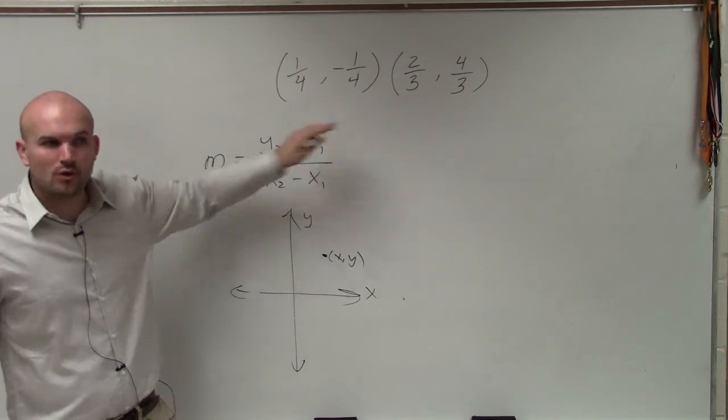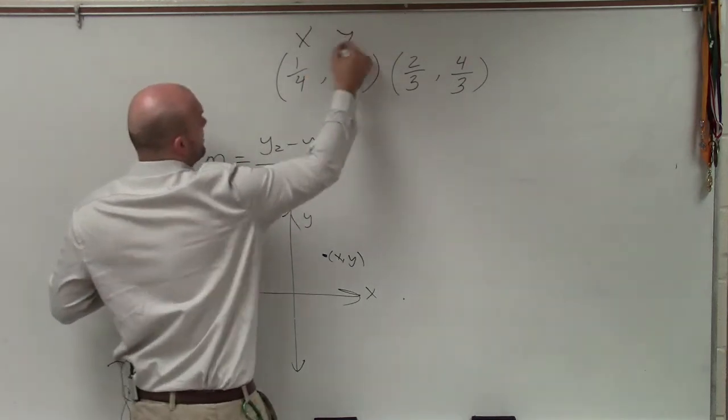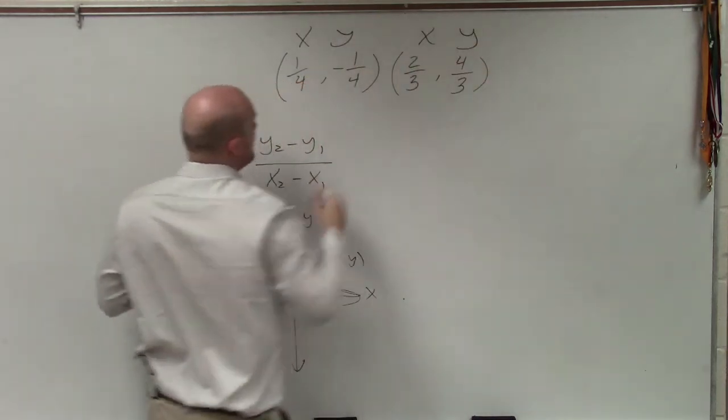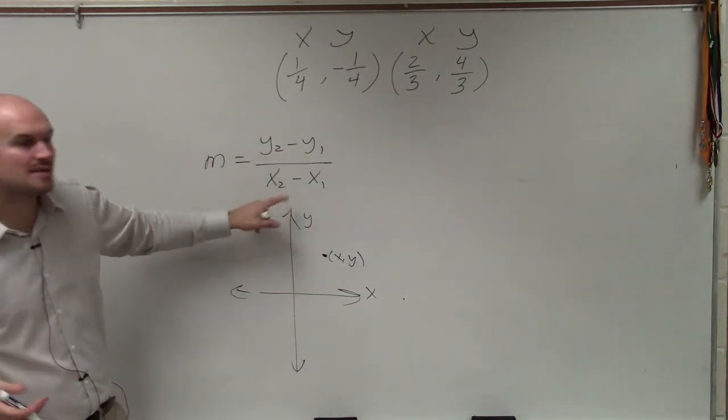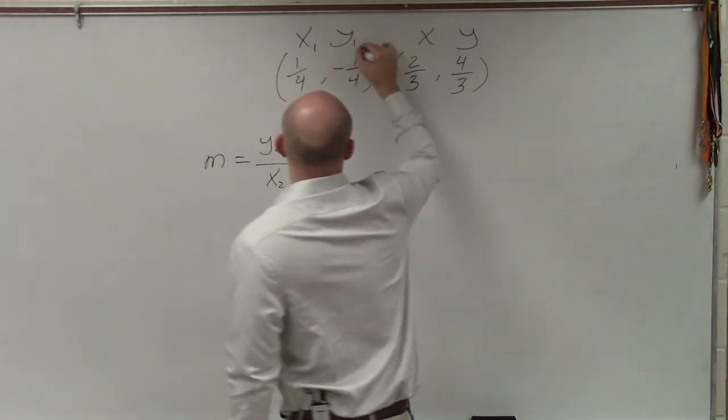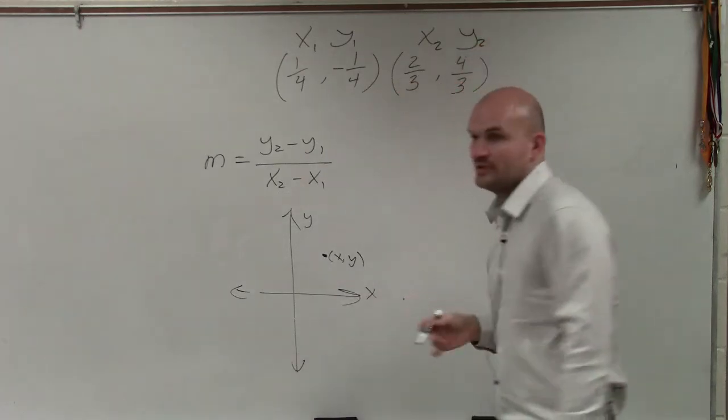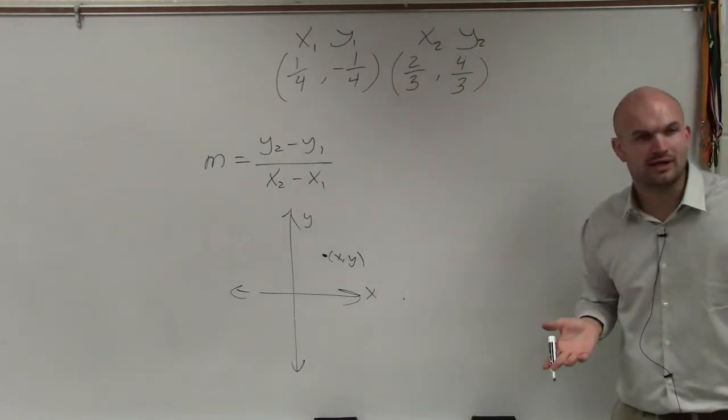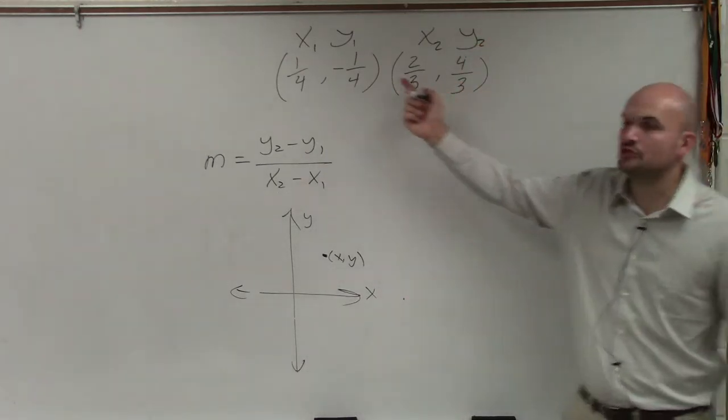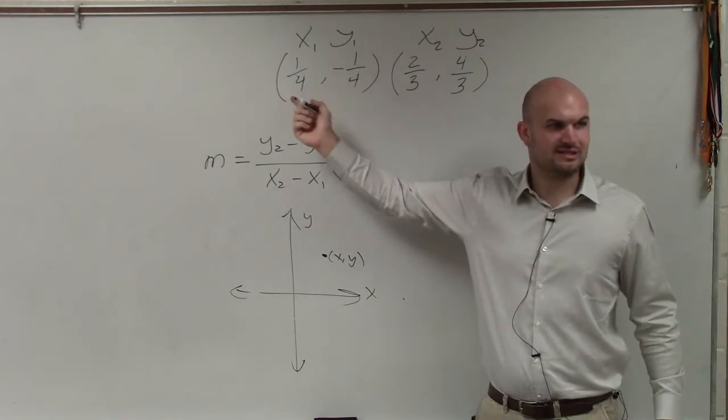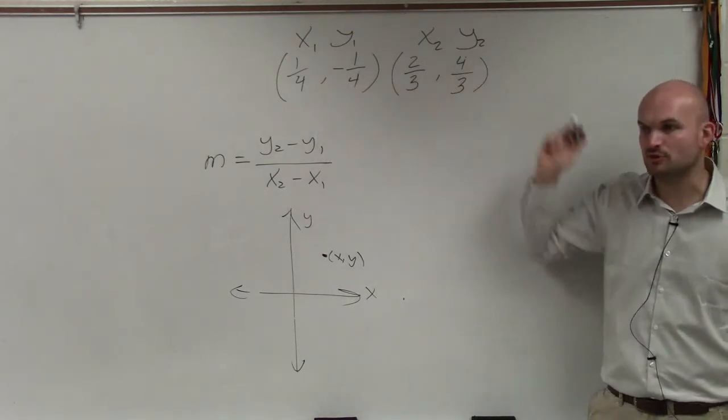So these are coordinates. Yes, they're fractions, but they're coordinates. So I can label them x, y, x, y. But to distinguish between them, we use the subscripts. So I'll call this the first point. I'll call this the second point. It doesn't really matter which one you call 1 and 2. You just got to make sure that this coordinate is the same, you know, both 1's and this one's both 2's, all right?